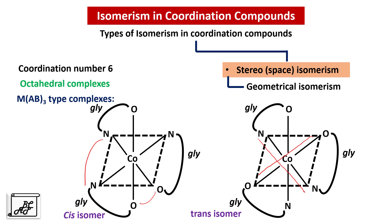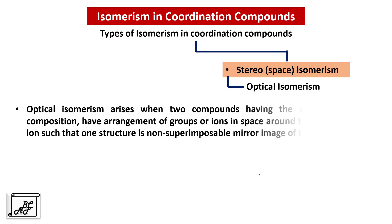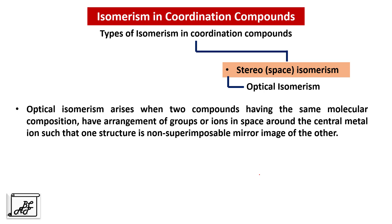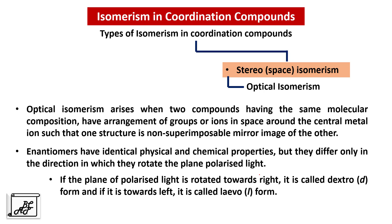This was all about geometrical isomerism, covering all types for coordination number 4 and coordination number 6. Let us move to the next type of stereoisomerism: optical isomerism. Optical isomerism arises when two compounds having the same molecular composition have arrangements of groups or ions in space around the central metal ion such that one structure is a non-superimposable mirror image of the other. These two mirror images are called enantiomers. They have identical physical and chemical properties but differ only in the direction in which they rotate plane polarized light. If the light is rotated towards the right it is called dextrorotatory, and if towards the left it is called levorotatory — also called D or L forms.